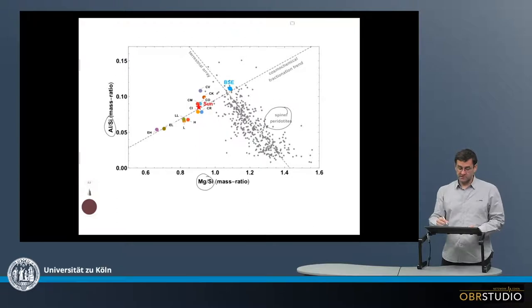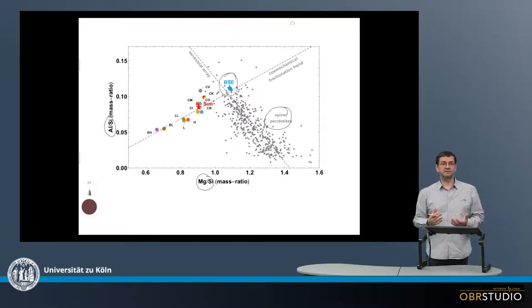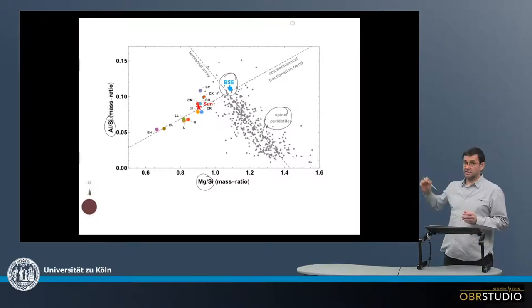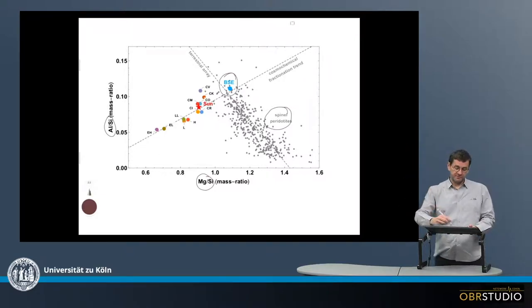Then more towards the center here is the composition of the bulk silicate earth. Now the spinelperidotites and bulk silicate earth form a correlation, which is often called the terrestrial array.